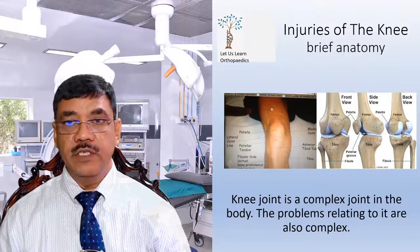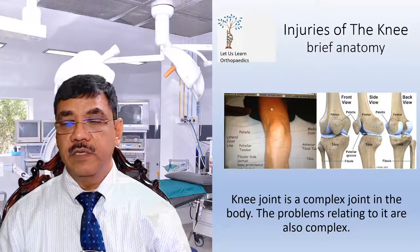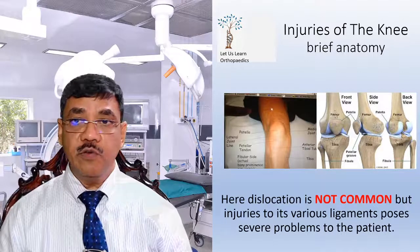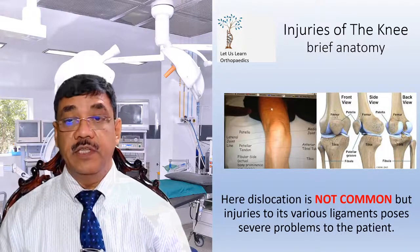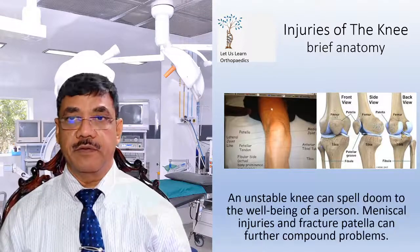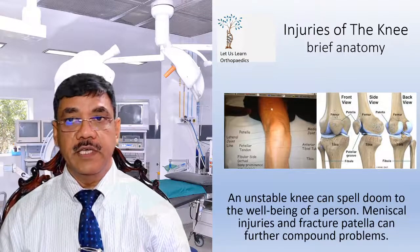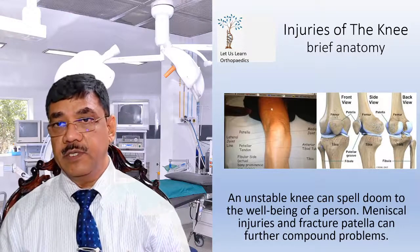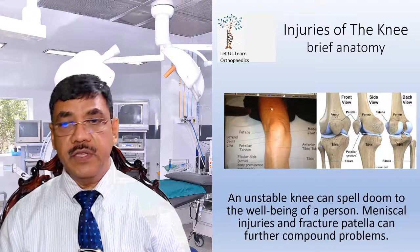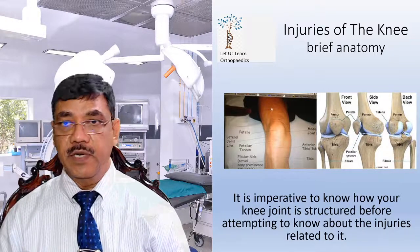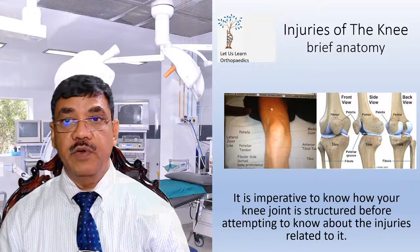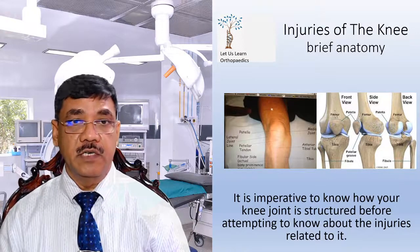The knee joint is a complex joint in the body and the problems relating to it are also complex. Dislocation is not common, but injuries to the various ligaments pose severe problems to the patient. An unstable knee can spell doom to the well-being of a person. Meniscal injuries and fractured patella can further compound the problems. It is imperative to know how the knee joint is structured before attempting to understand the injuries related to it.